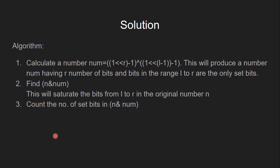Let's see how to solve this problem. The stepwise algorithm is: in the first step, we calculate a number num using this expression. This will produce a number num having r number of bits, where bits in the range l to r are the only set bits and the rest of the bits are 0. In the second step, we find the bitwise AND of our number n and the calculated number num. This will isolate the bits from l to r in the original number n, and then we count the number of set bits in this result.